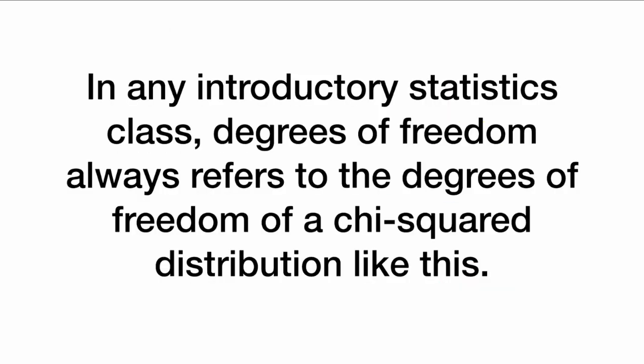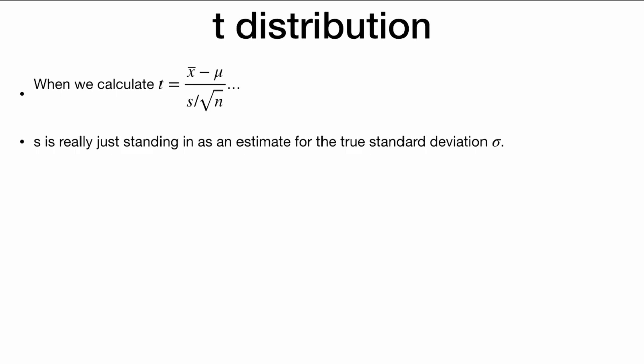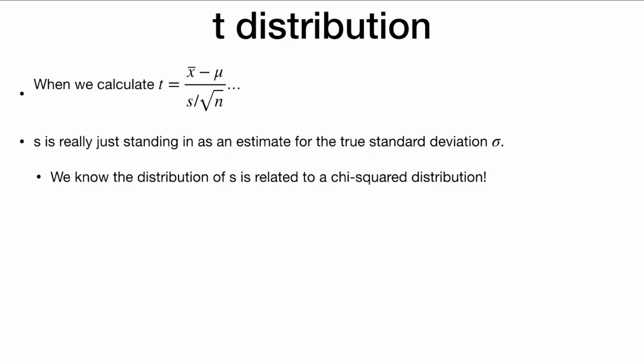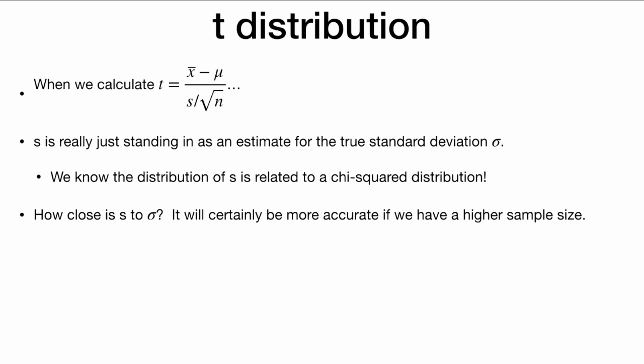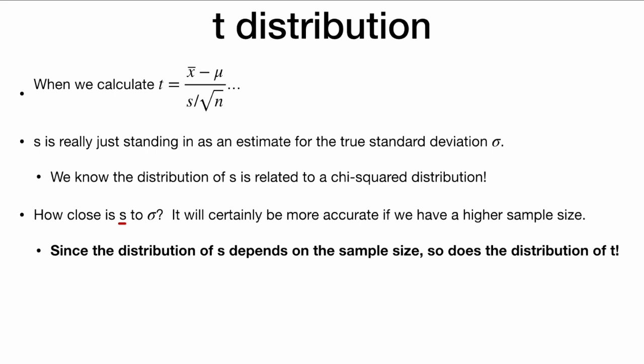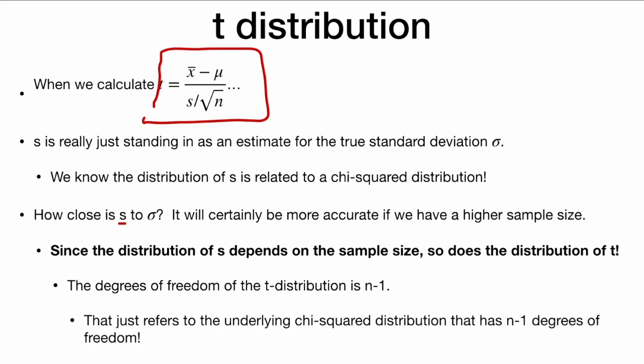In any introductory statistics class, degrees of freedom always refers to the degrees of freedom of a chi-square distribution. You might say that's not true — there are other distributions with degrees of freedom, like a t-distribution. When we calculate a t-statistic, the sample standard deviation s is really just standing in as an estimate of the true standard deviation sigma. The distribution of s is related to a chi-square distribution because it is a sum of squares. How close is s to sigma depends on the sample size — it will be more accurate with higher sample size. So the distribution of s depends on n, which is the degrees of freedom. Since the distribution of s depends on n, so does the distribution of t, and the degrees of freedom of the t-distribution is n minus one.